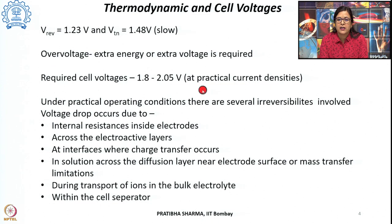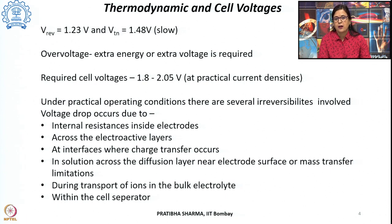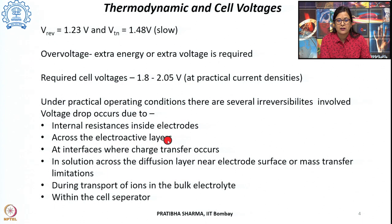Under practical operating conditions, when current densities are higher for greater hydrogen production, the required cell voltage lies in the range of 1.8 to 2.05 volts. There are several irreversibilities in the cell, including resistances to charge transfer and charge transport, resulting in voltage drops. These voltage drops can occur across the electroactive layers, because of internal resistances in the electrodes, at charge-transfer interfaces, and within the solution across the diffusion layer near the electrode surface due to mass transport limitations.